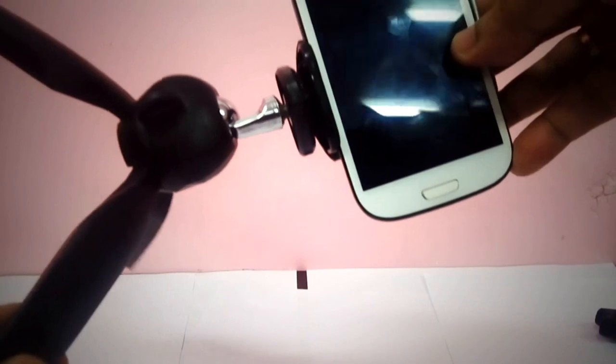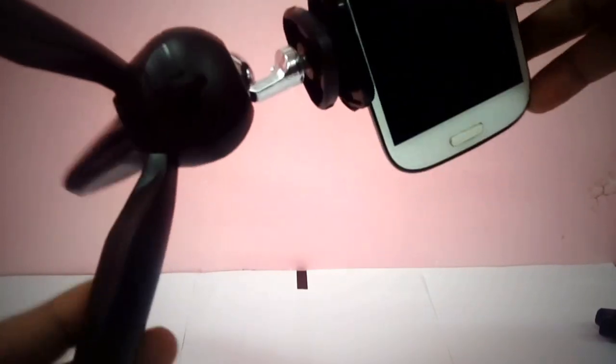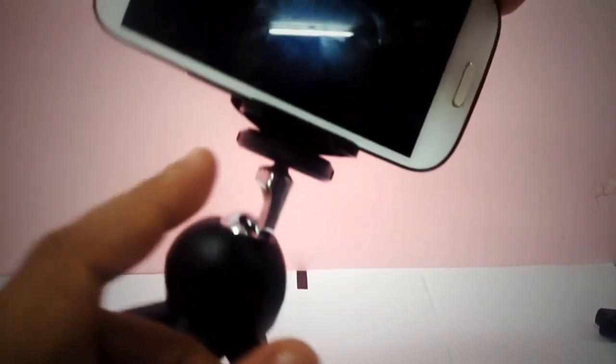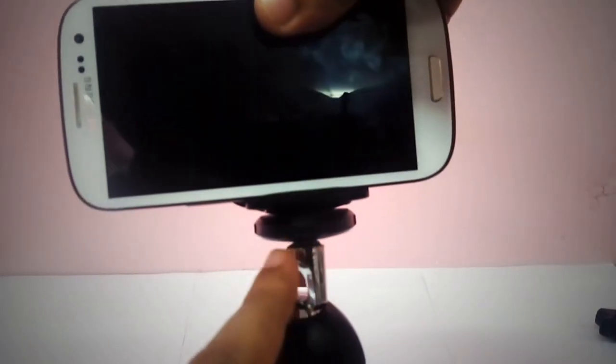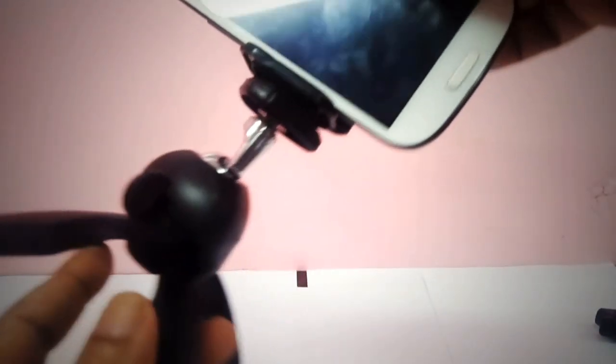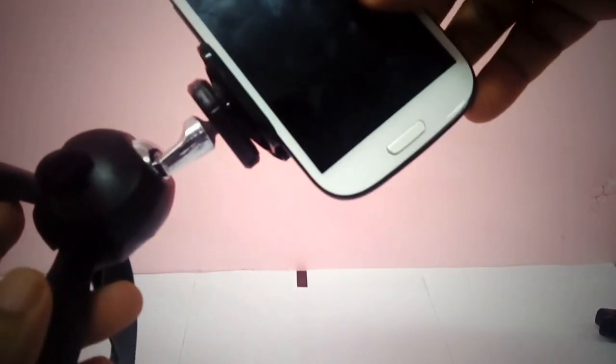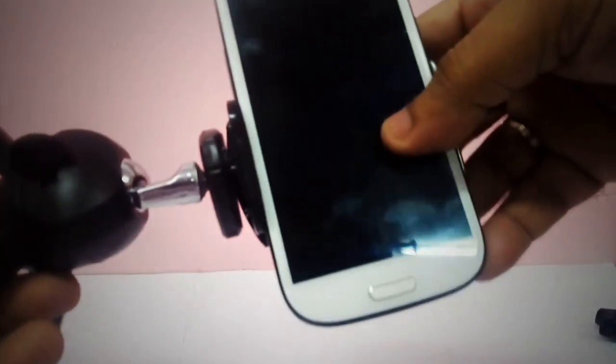I bought this online, and as you can see, this is the mini tripod and it has a phone holder here. This will be attached to your mini tripod. First we are going to detach this phone holder from the mini tripod.